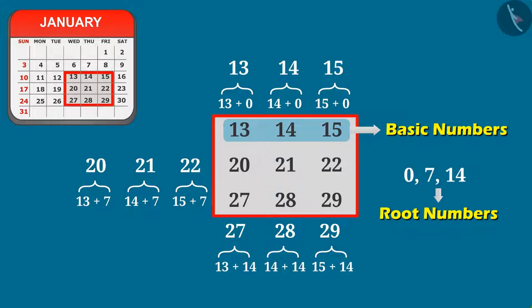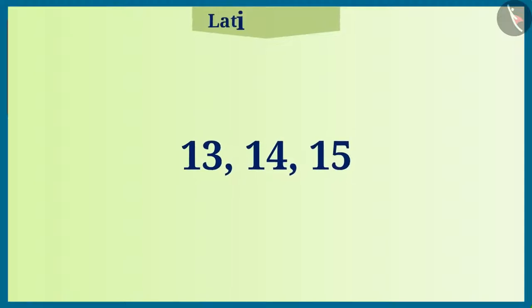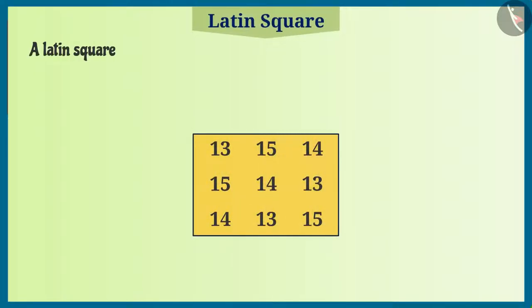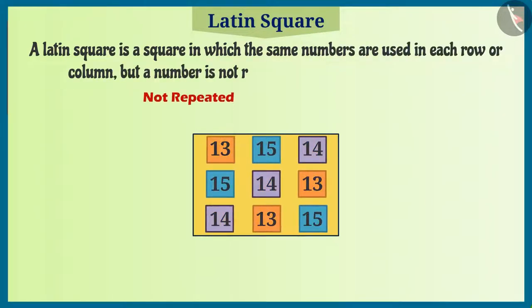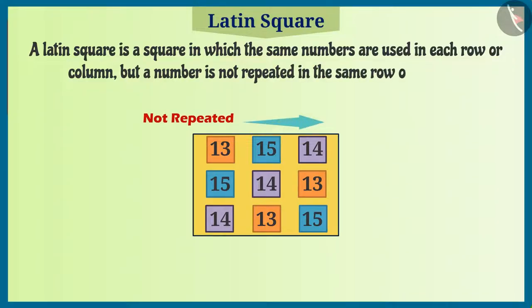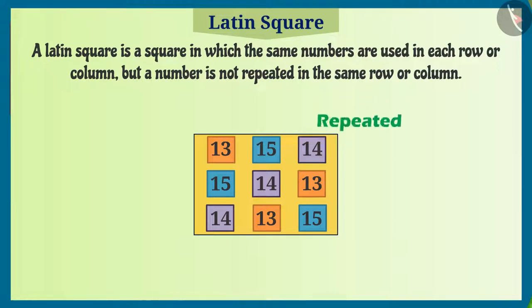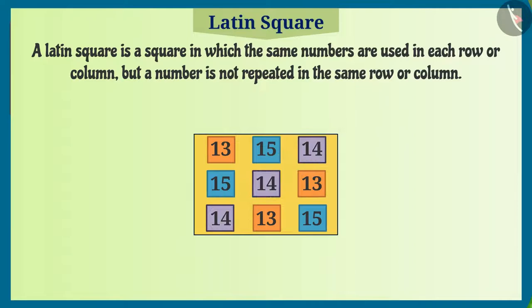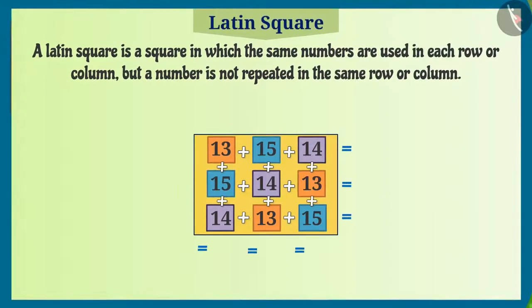Now, by using 13, 14 and 15 I will make a Latin square. A Latin square is a square in which the same numbers are used in each row or column, but a number is not repeated in the same row or column. A number can get repeated more than once along a diagonal. It is worth noticing that in a Latin square all the row sums and column sums are equal.